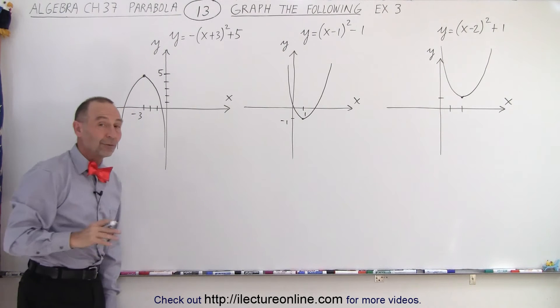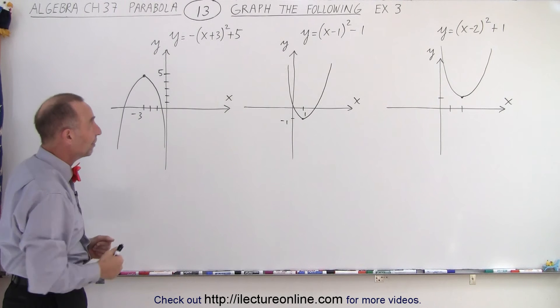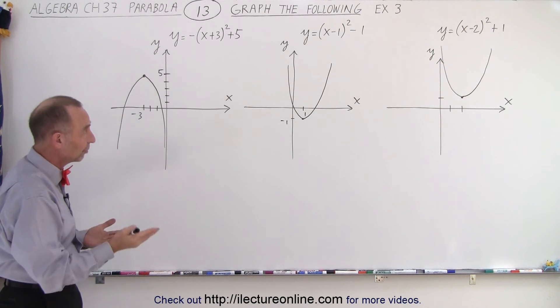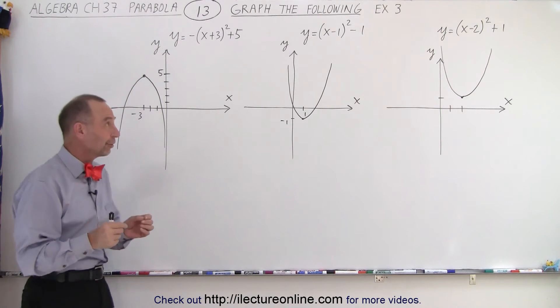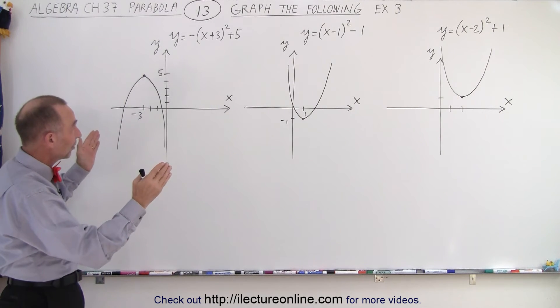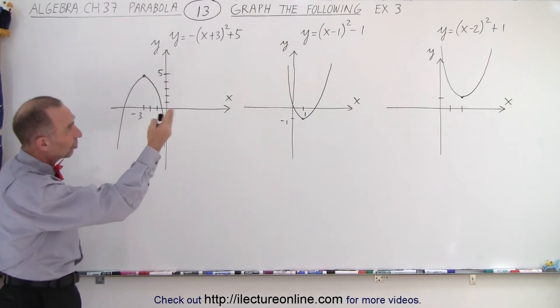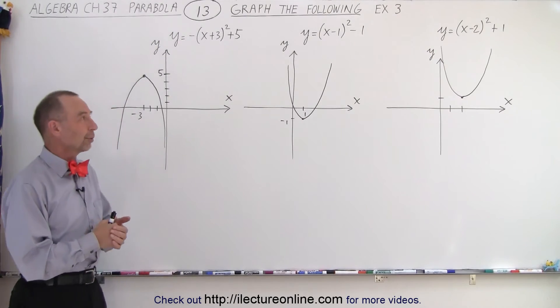So you can see that you can relatively easily graph quadratic equations that are in this format. You can easily see how much they shift up or down, how much they shift to the left and to the right. So it makes it easier to graph. All you have to do is find the vertex, determine if it opens upward or downward, and then see if it's either a wide or a skinny parabola depending upon the number in front. In this case, there's just a number one in front of each one, so they look normal or regular.